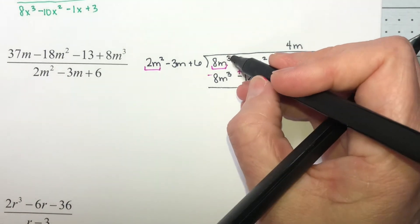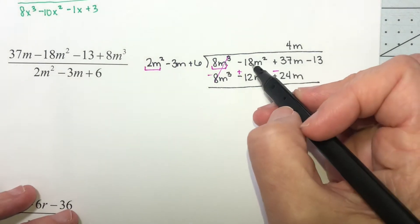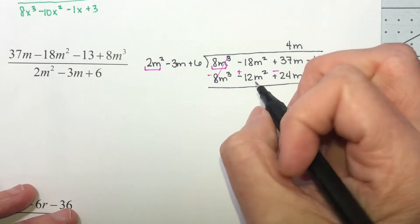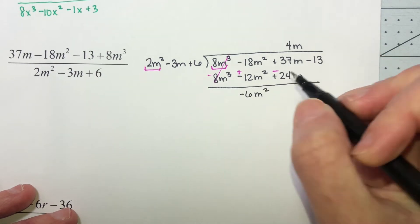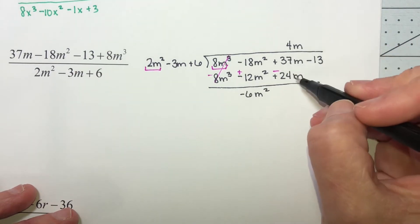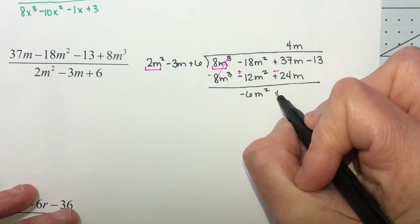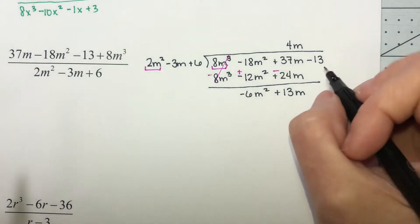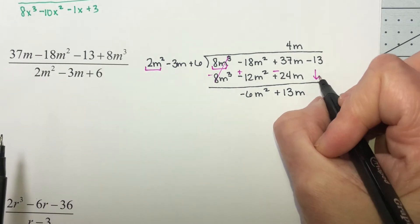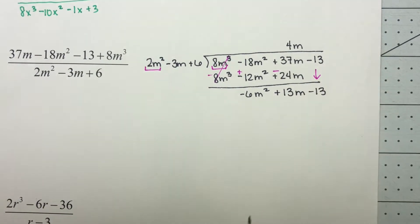Our first term cancels out, and negative 18 plus 12 gives negative 6m squared. 37 minus 24 is 13m, and now I bring down the minus 13. Repeat the process.